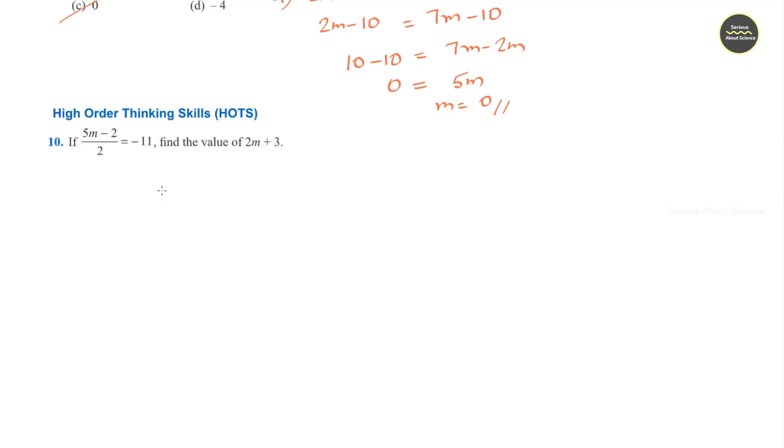10th question. If 5m minus 2 divided by 2 is equal to -11, find the value of 2m plus 3.